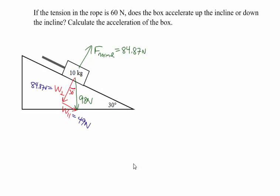In this last variation, we're given the tension in the rope: 60 Newtons pulling up the ramp. The first question is whether the box accelerates up or down the incline. We look at the forces parallel to the incline — the perpendicular forces still cancel out. We have 60 Newtons acting up the incline and 49 Newtons acting down the incline, so the box is going to accelerate up the incline. We then calculate what that acceleration is, making up the incline the positive direction.